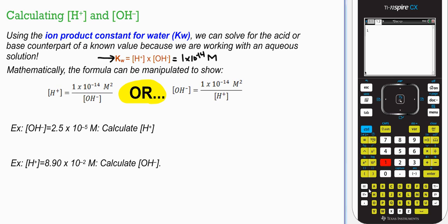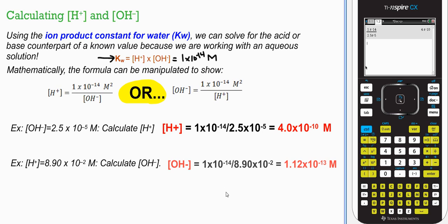As I do that, pay attention to the buttons I press. 1 double E negative 14, divided by 2.5 double E negative 5. We'll get into the calculations of all this stuff in a bit, but we get 4 times 10 to the negative 10th. We get 2 sig figs because our given came with 2 sig figs in the coefficient. The same thing, if you have hydrogen ion concentration, you plug into the formula. It's the same operation. 1 times 10 negative 14, divided by the value you know to get the value you're seeking.